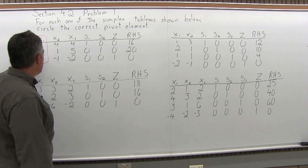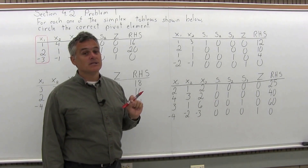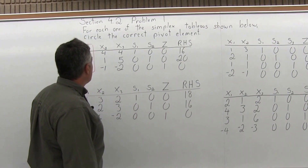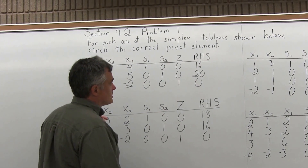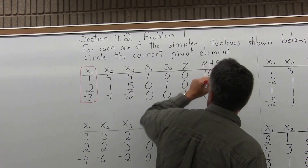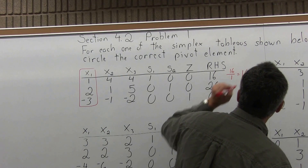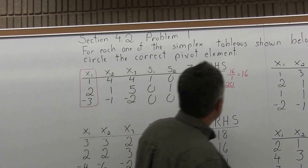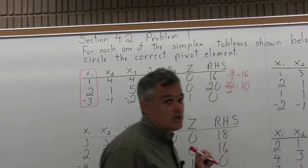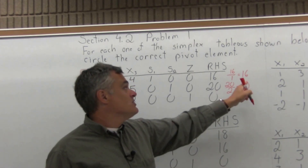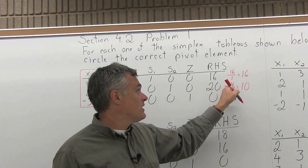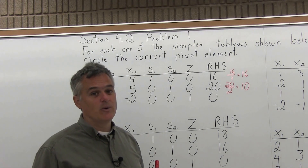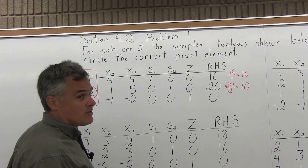The pivot is either the 1 in the top position or the 2 in the middle position. Your pivot can never be negative and it can never be zero. To determine which one, we evaluate ratios of right-hand side value over pivot column value. In the top row, 16 divided by 1 equals 16. In the middle row, 20 divided by 2 equals 10. We want the smaller positive ratio, and 10 is smaller than 16. So our pivot element for the first tableau is the 2 in the middle row of the X1 column.